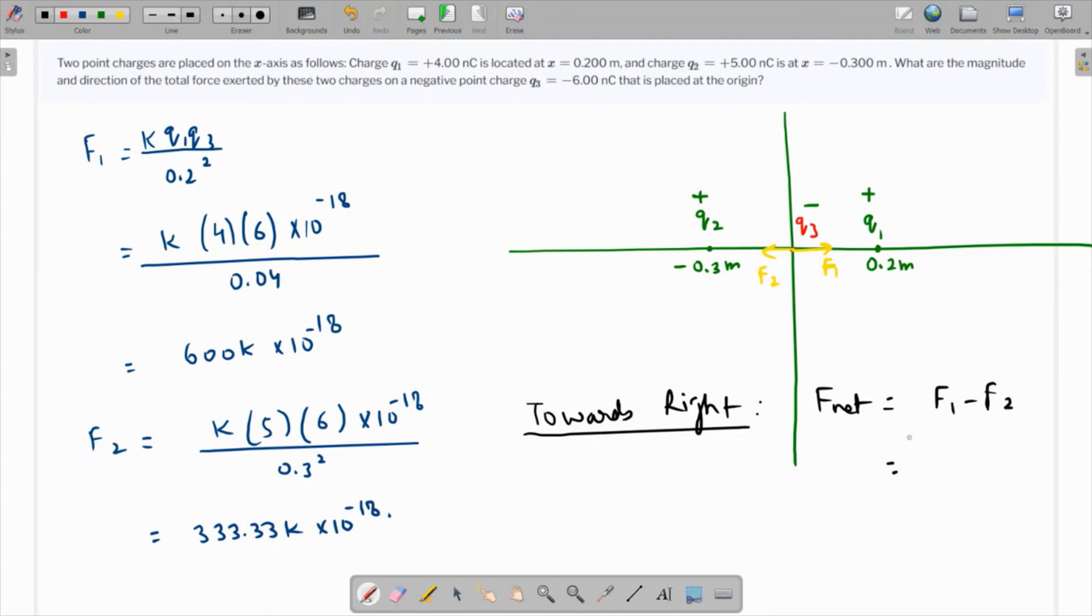We can easily subtract this: 600 minus this value is 266. That's multiplied by k as well, so that is 9 times 10 raised to 9. We are getting 2400 times 10 raised to minus 9. The final answer.